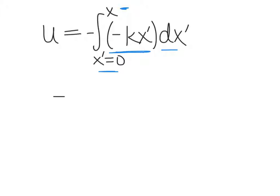And you can see that if you do this integral, you're going to get one half kx squared. So in other words, the potential energy associated with displacing the mass from equilibrium is one half kx squared.